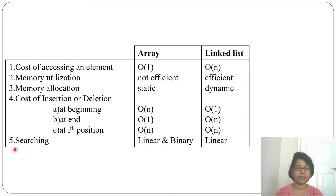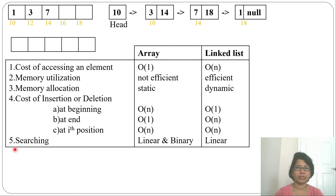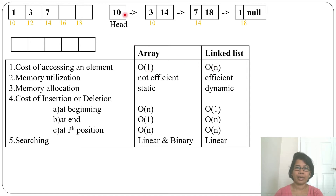Now let's compare array and linked list. Cost of accessing an element in an array is O(1) because you know the formula to find the location directly. But in a linked list it is O(n) because the head pointer holds only the first node's address, so you need to traverse from there to reach any element — that traversal takes O(n).